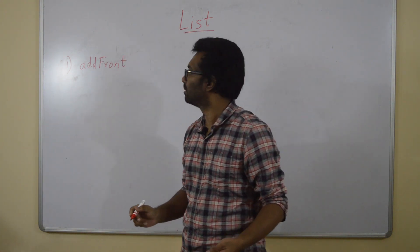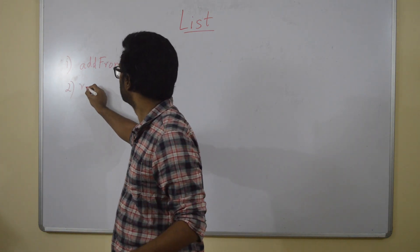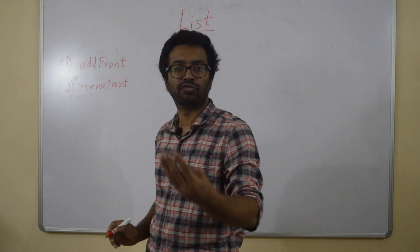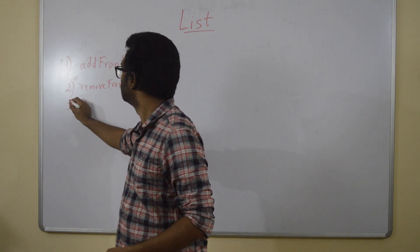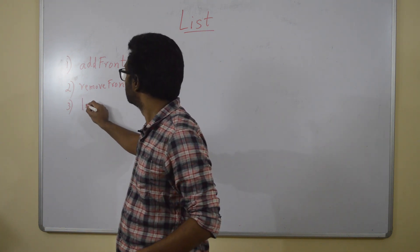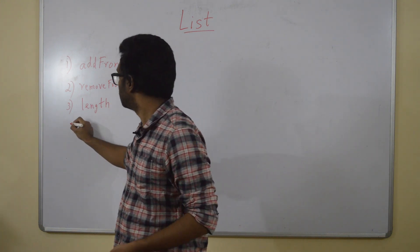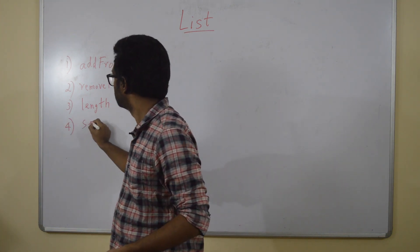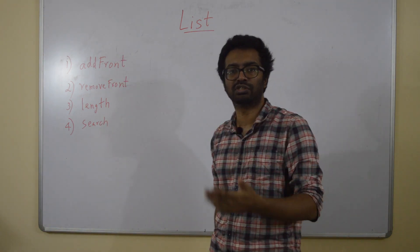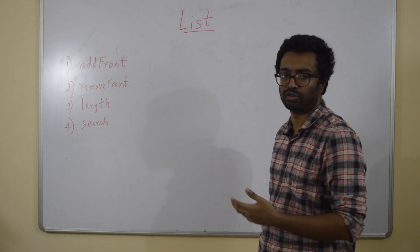Add to the front of the list. What else? Remove from the front. Length of the list, and searching for an element. These are a few functions a list data structure should support. Little later, we will think about a few more of such things.